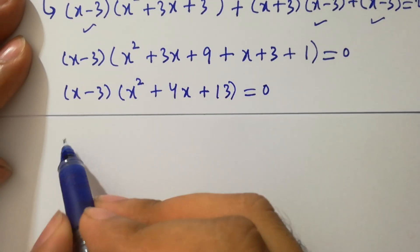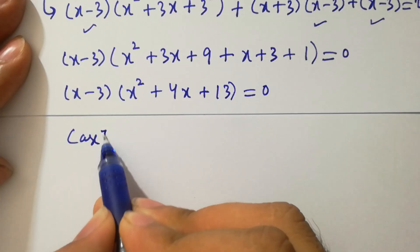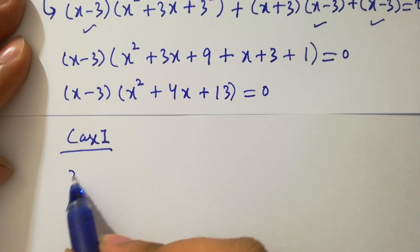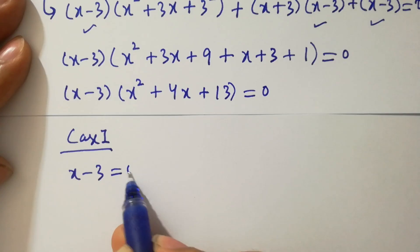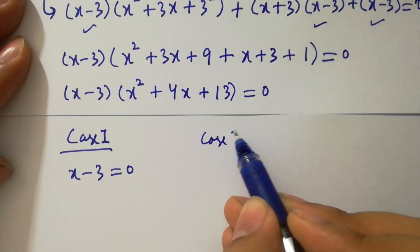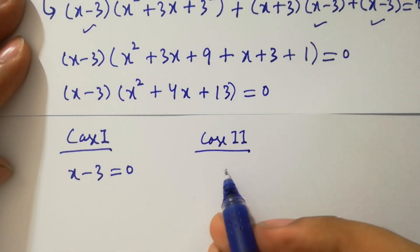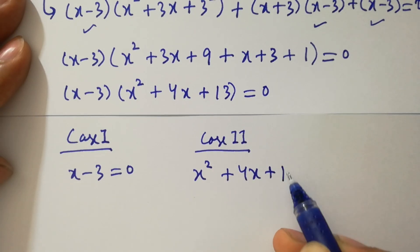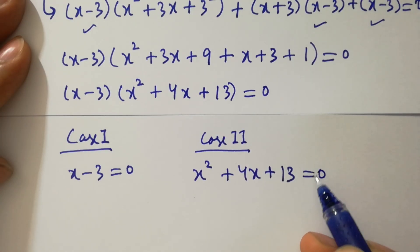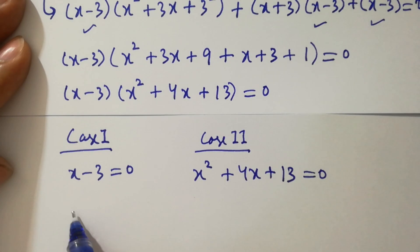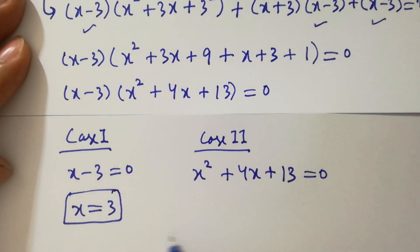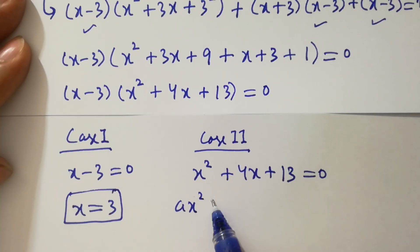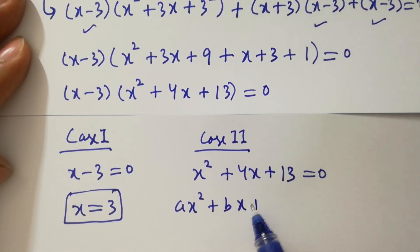So we have two cases. Case 1: x minus 3 equals 0. Case 2: x squared plus 4x plus 13 equals 0. From case 1 we get x equals 3, which is our real solution. Case 2 is a quadratic equation of the form ax squared plus bx plus c equals 0.